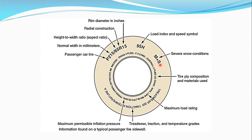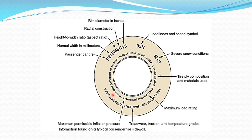In the coding, 95S means the load index is 95. M+S represents severe snow condition — meaning the tire is specifically used only in snow-related conditions. The coding also shows 2× cord, representing the number of plies. Information written on the tire circumference includes the ply material, load rating, tread wear, traction, and temperature grade, as well as the maximum permissible inflation pressure.